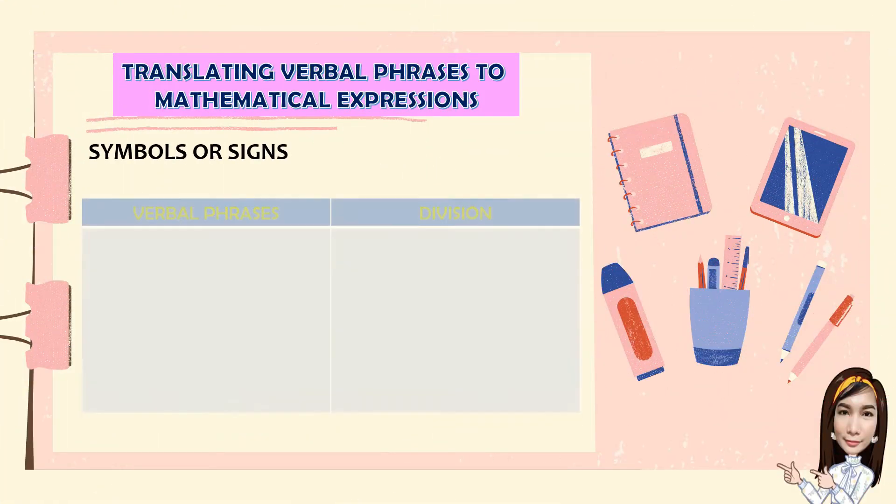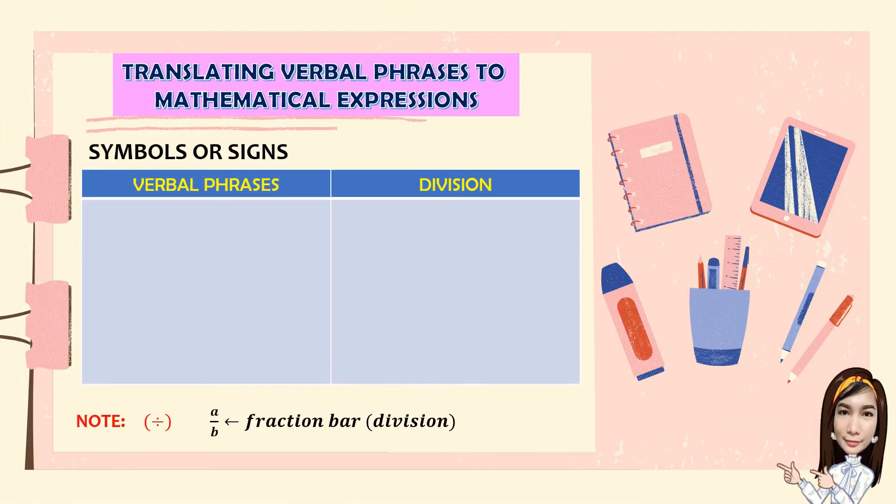The symbols or signs for division. Take note, we use the fraction bar that denotes division. So, A divided by B can be written as A over B. So, for the verbal phrases, the quotient of B and 3 is written as B over 3. The ratio of 5 to Y, 5 over Y.